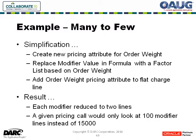The solution was to first create a new pricing attribute for order weight. The seeded order weight attribute is a qualifying attribute, so the first thing we did was define an additional attribute for order weight as a pricing attribute, using the same function that was delivered but creating it as a pricing attribute. Next, in the formula that calculated the actual charge per line, the formula initially referenced what was called the modifier value — it would read the value sitting on the discount line and use that in the formula calculation.